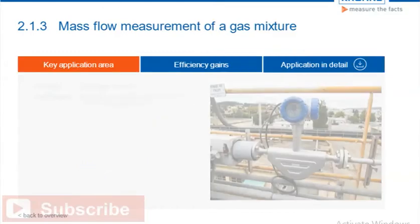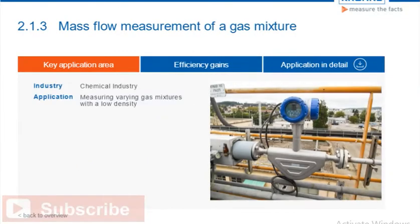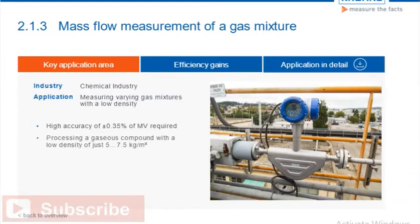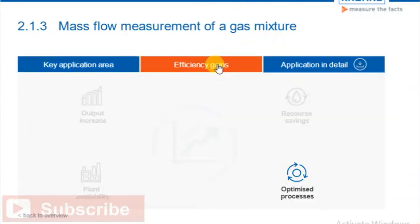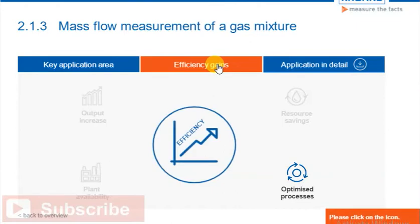A production plant for fluoride derivatives must meet a measuring accuracy of plus-minus 0.35% in monitoring the flow rates of a gas mixture with very low densities between 5 and 7.5 kilograms per cubic meter. Please click on the icon to learn more about the efficiency gains.